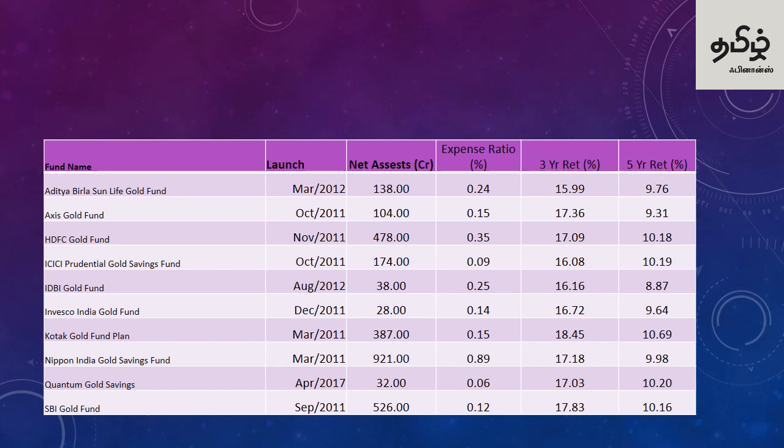Even a small difference in expense ratio of 1-2-3% can affect the returns over time. When you buy a gold mutual fund, the fund also holds some cash and liquid funds alongside gold to manage redemptions. That is why returns are slightly affected by liquid fund holdings.